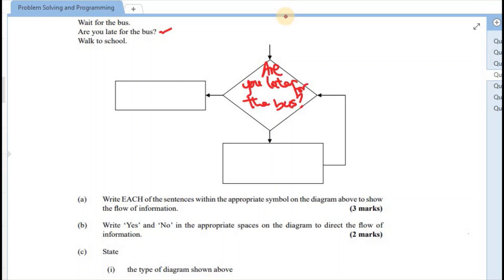So are you late for the bus? The yes in this case for the while loop would be the one entering in the loop. And if you're late for the bus, that means that you would be walking to school. So walk to school. And then additionally, the other would have been to wait for the bus. Yes. So that's A.